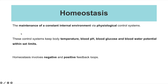This video is all about homeostasis, and the definition is the maintenance of a constant internal environment via physiological control systems. Essentially it's making sure that the conditions inside of you remain within set limits. The conditions that are controlled include temperature, the pH of your blood, the amount of glucose in your blood, and blood water potential — but we're only focusing on blood glucose concentration and blood water potential.